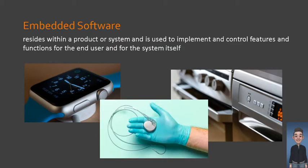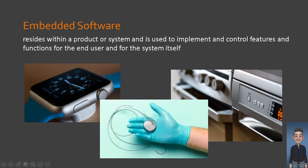Fourth type, we have embedded software. Embedded software is similar to firmware because they usually serve the same function. It resides within a product or system and is used to implement and control features and functions for the end user and for the system itself. Good examples include a smartwatch programmed to connect to other devices, a pacemaker that senses if the heart is beating faster or slower than normal and sends a signal to regulate its beating, and a washing machine using fuzzy logic to decide how much water to use and how long the wash cycle should be.